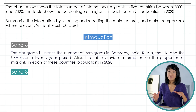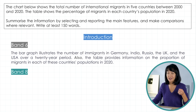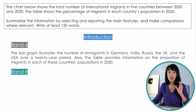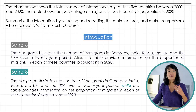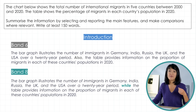All good — apart from the linker 'also'. We don't need it here. Either drop it, or we could have one long sentence with 'while': 'The bar graph illustrates... while the table provides information on...' That's all we need to change here.